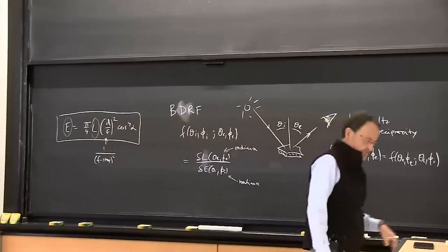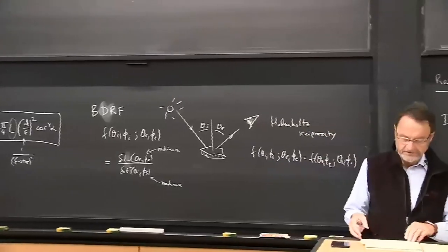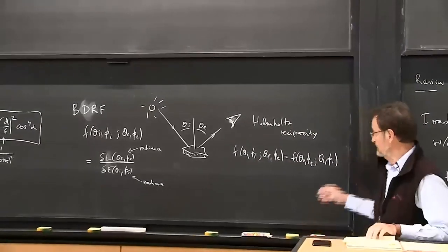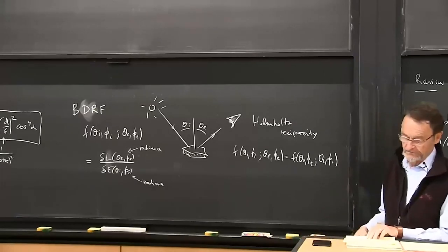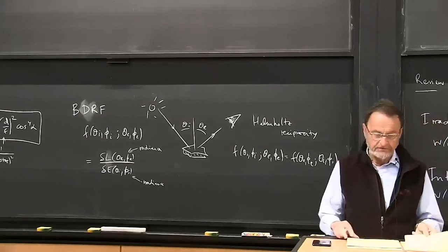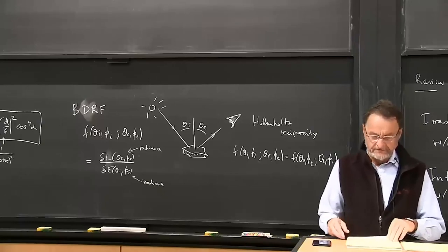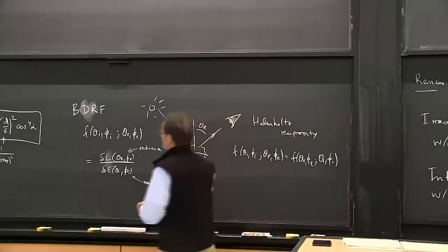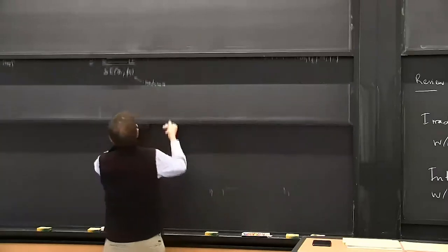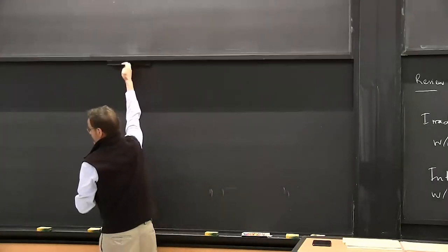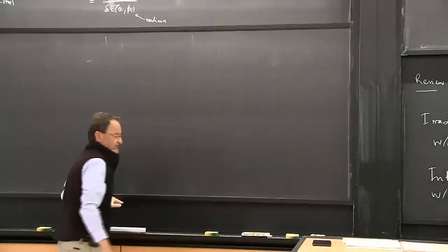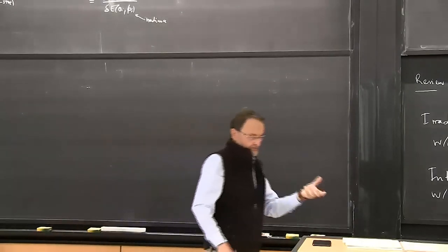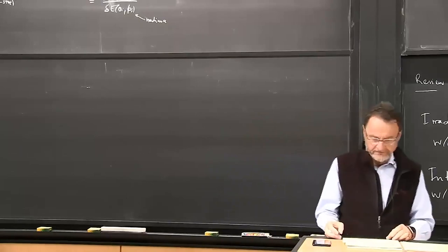And yet we don't seem to care—we like the pictures. This suggests that Helmholtz reciprocity isn't something critical to human or machine vision other than it's a shortcut: if you've measured one direction, then you've got the other one by symmetry, so it cuts the number of measurements you need in half.